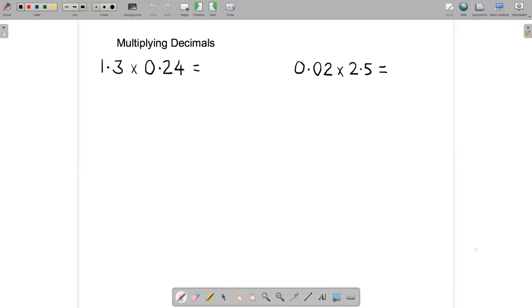Something that a lot of children find tricky is figuring out where to place the decimal point when you're multiplying decimals. So let's do a couple of examples. Let's do 1.3 times 0.24.